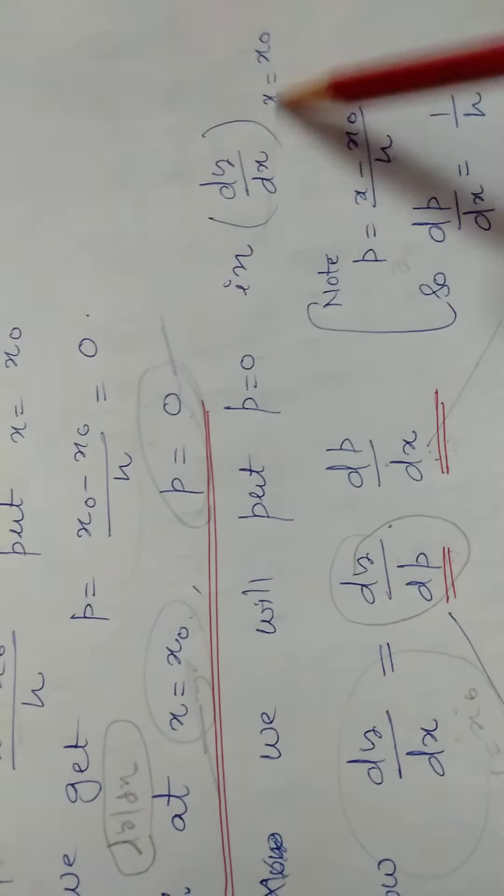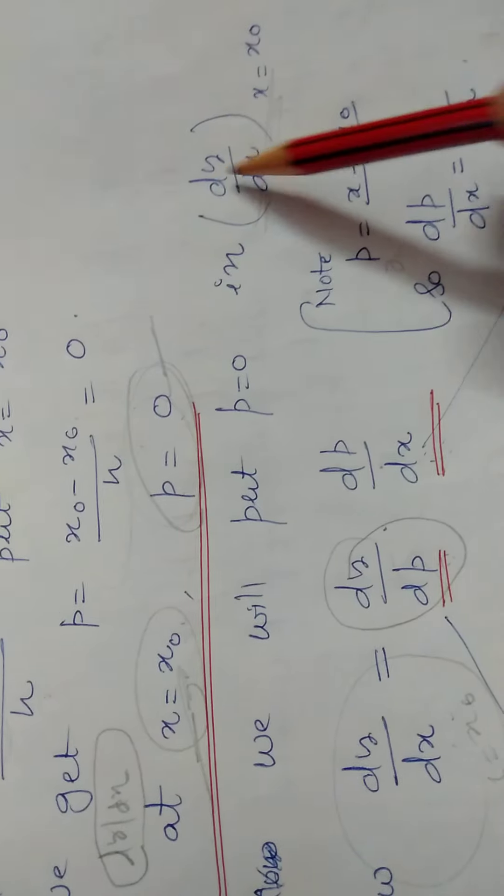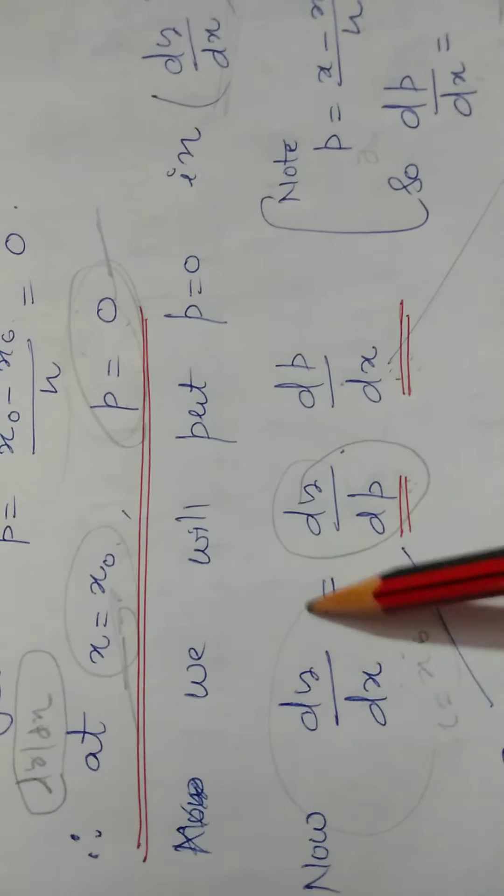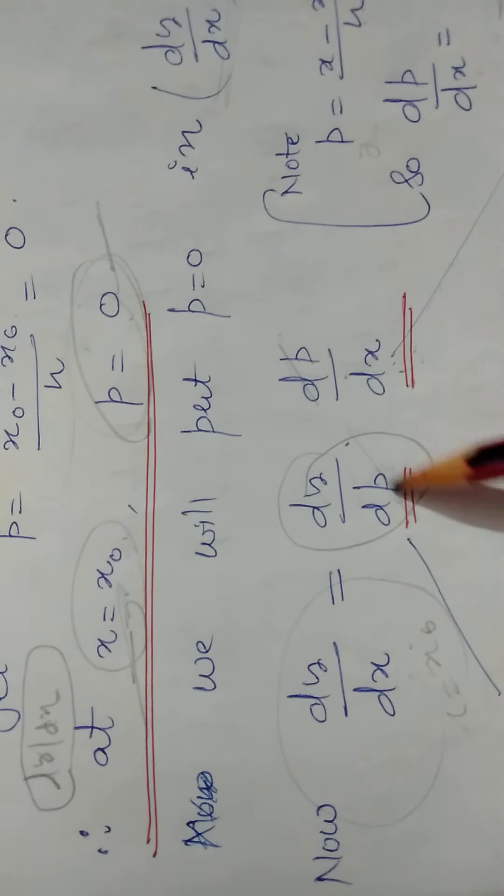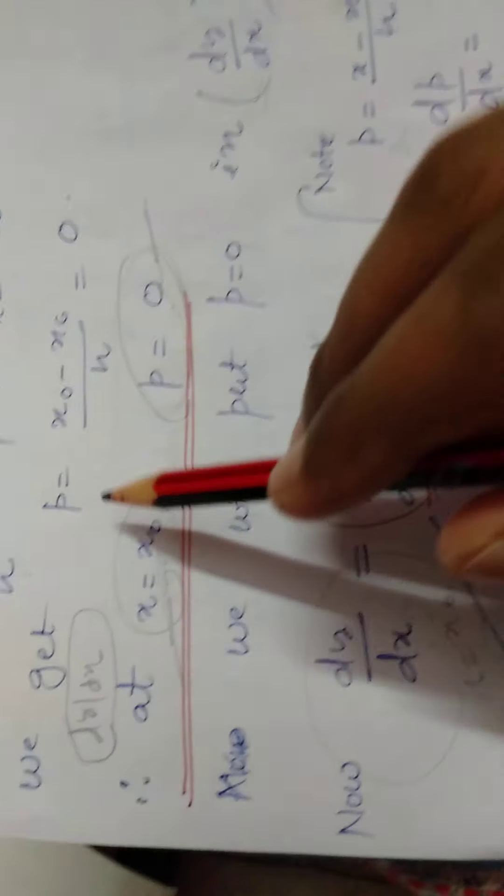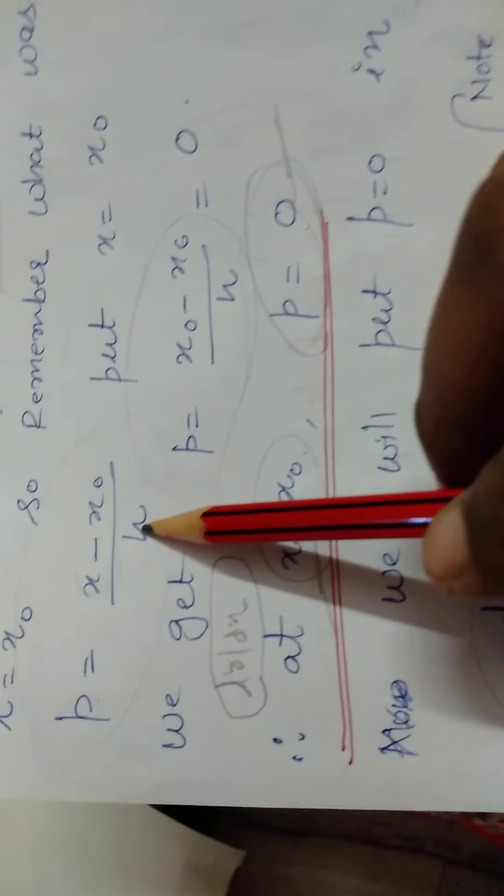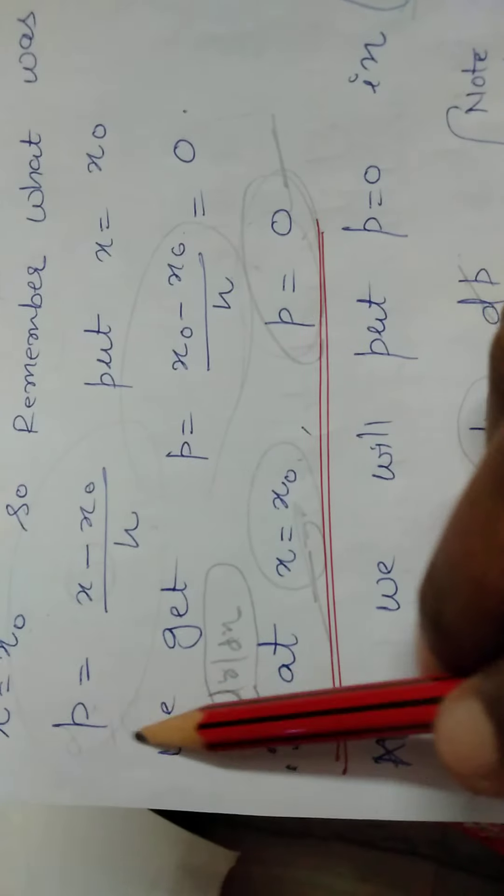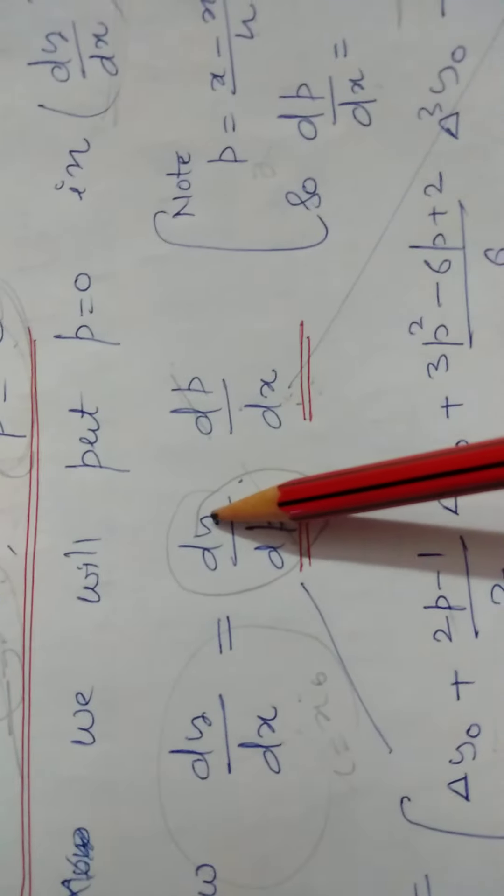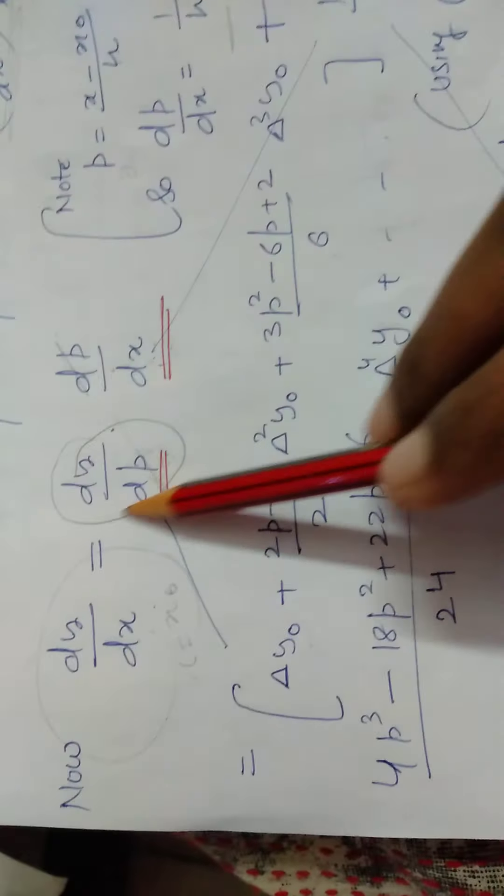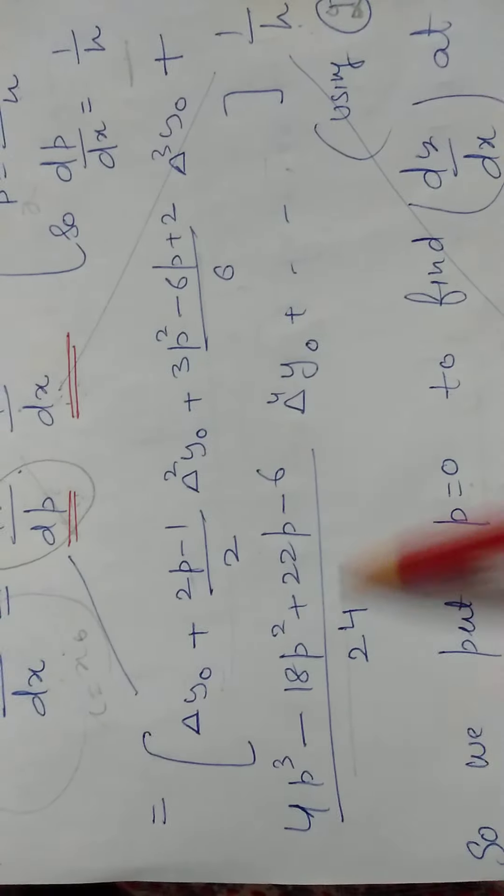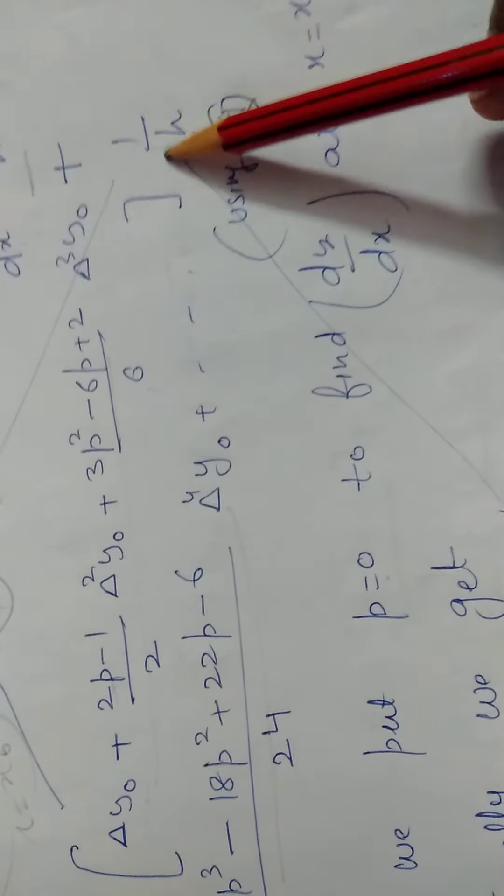Now we come back to our derivative. dy by dx can be written by the chain rule as dy by dp times dp by dx. From this formula we calculate dp by dx. P is x minus x naught divided by h, so dp by dx value becomes 1 by h. Therefore dy by dx is dy by dp into dp by dx, which is 1 by h.